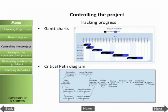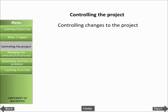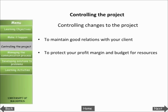Gantt charts and critical path diagrams are useful for tracking project activity and for making necessary changes to the project plan. Sometimes an addition or change to the project will be requested. Controlling changes to the project will help to maintain good relations with your client and to protect your profit margin and budget for resources.